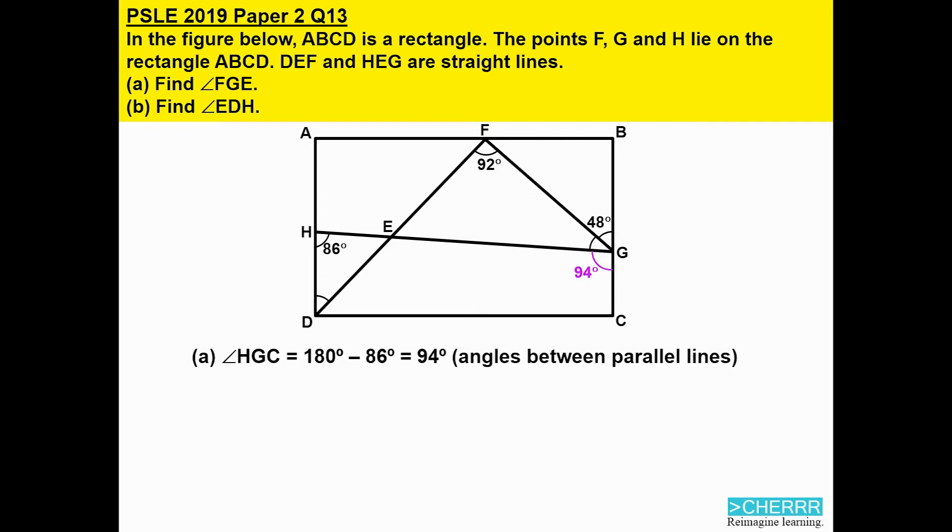Next, we look at the line BC. Angles on a straight line will add up to 180 degrees and so we are able to find angle FGE. We take 180 degrees, minus 48 and minus 94, and we will get 38 degrees.